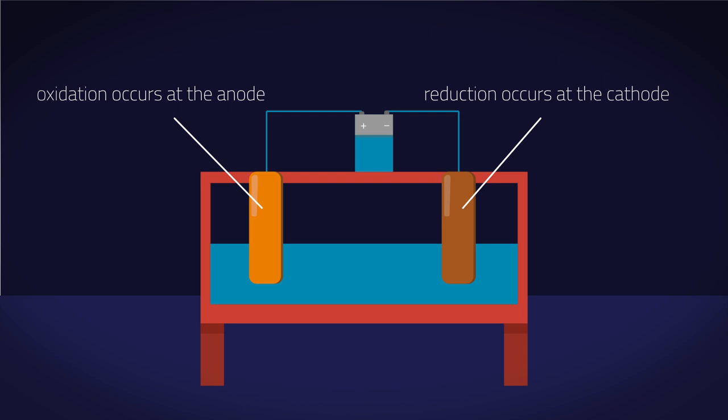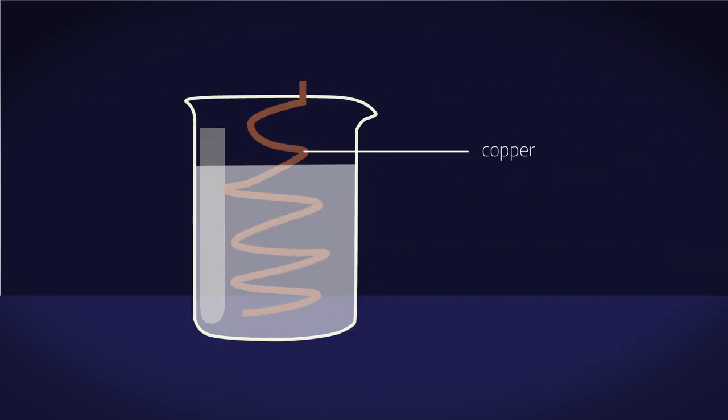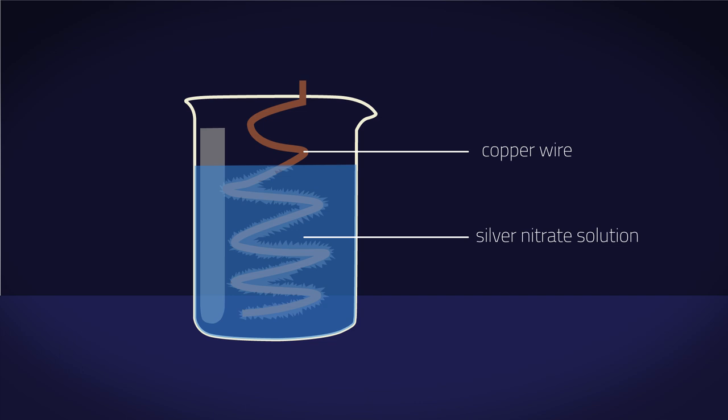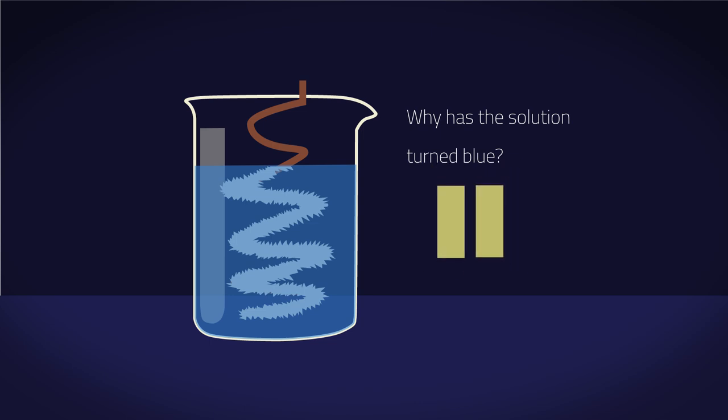Let's have a look at a simple redox reaction. A strip of copper wire is placed in silver nitrate solution. Over time, the solution changes color from colorless to bright blue. You will also observe silver metal crystal deposits on what was once copper wire. Why has the solution turned blue? Pause and think.